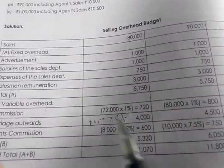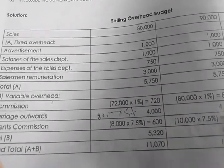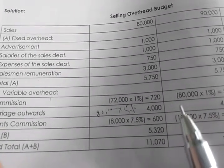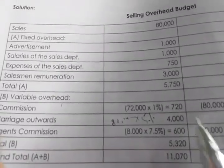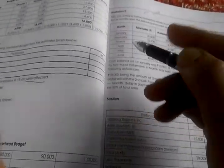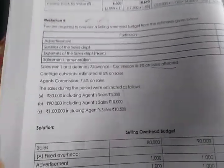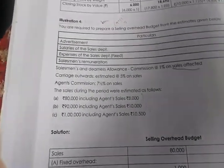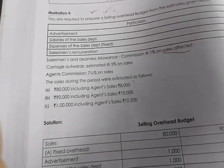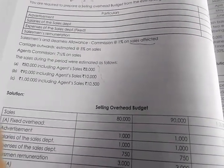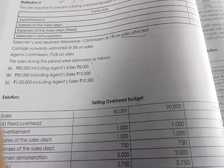The key twist in this question is understanding which sales figure to apply each percentage to — affected sales versus total sales versus agent sales. In the next video I will cover Illustration 5, which is a bit bigger. Thanks for watching. Please share the video. If you have any queries, write them in the comment box and I will try to resolve them. Thanks a lot, bye.